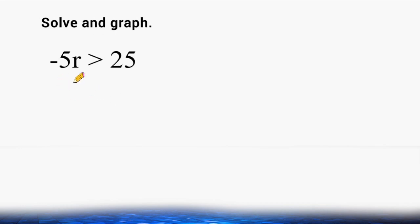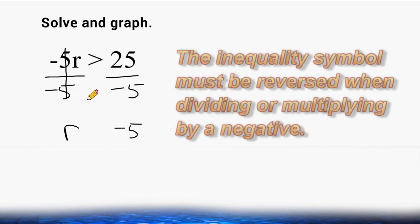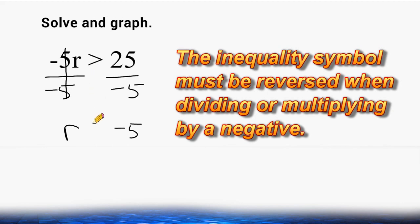We have an inequality that reads negative 5 times r is greater than 25. So we are going to figure out what values of r multiplied by negative 5 would give us a product that is greater than positive 25. The first thing we have to do is take our coefficient of negative 5 and turn that into positive 1. Anything divided by itself is positive 1, so we divide negative 5 by itself, and we do the same thing on the other side to balance out our inequality. That gives us positive 1r on the left, and on the right we have 25 divided by negative 5, which is negative 5. But we must be careful — whenever you are dividing by a negative when solving an inequality, you must reverse the order of your inequality symbol. So we reverse that greater than sign and turn it into a less than sign.